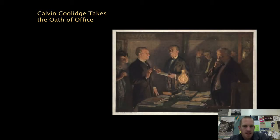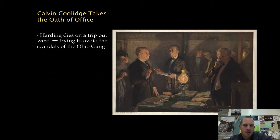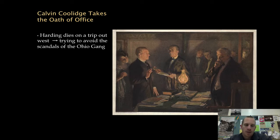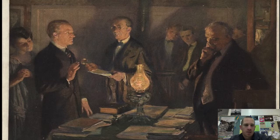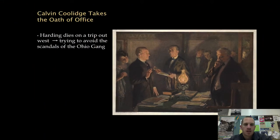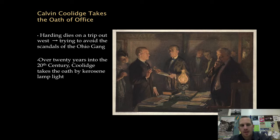After the Teapot Dome scandal, Warren G. Harding took a trip out west to reconnect with the people, avoid additional scandals, and separate himself from the Ohio gang. He went to Alaska — the first president ever to do so — and on his way home through San Francisco, he died. Some say he was poisoned; others say he had a heart attack. Calvin Coolidge, his vice president, took the oath of office — strangely enough, by kerosene lamp, over 20 years into the 20th century despite electricity having existed for about 40 years.